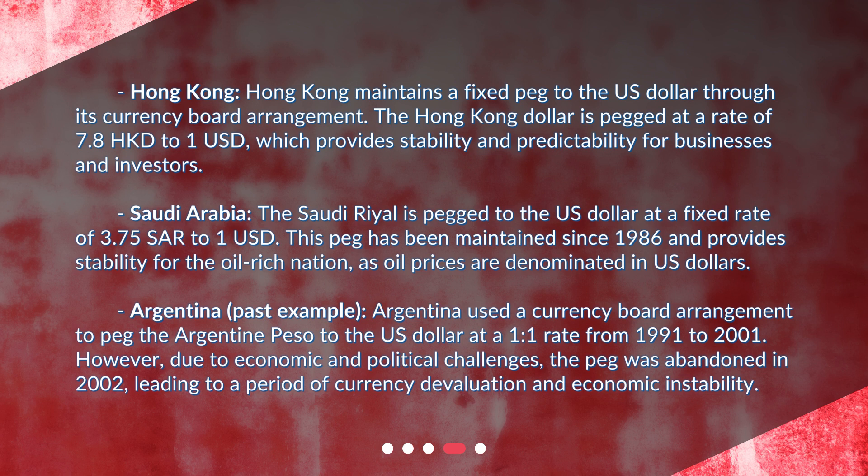As a past example, Argentina used a currency board arrangement to peg the Argentine peso to the US dollar at a 1-to-1 rate from 1991 to 2001. However, due to economic and political challenges, the peg was abandoned in 2002, leading to a period of currency devaluation and economic instability.